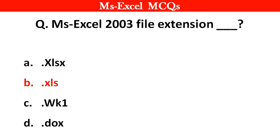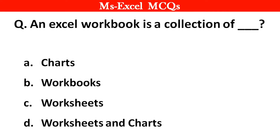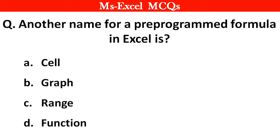Next question. An Excel workbook is a collection of dash. The right answer is option D: Worksheets and Chart. Next question. Another name for a pre-programmed formula in Excel is? The right answer is option D: Function.